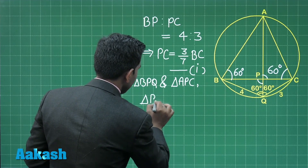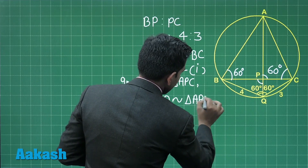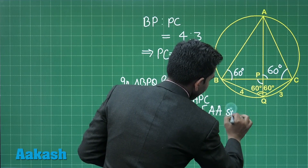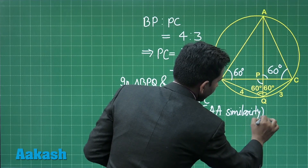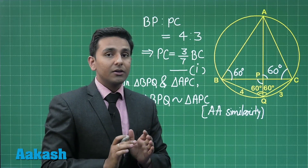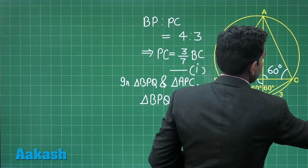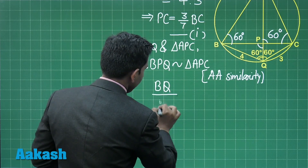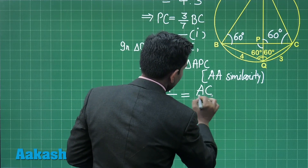With these two equal angle pairs, we can write that triangle BPQ is similar to triangle APC using the AA similarity criterion. Since the two triangles are similar, their corresponding sides are proportional. So we can write the ratio of BQ to PQ is equal to the ratio of AC to PC.